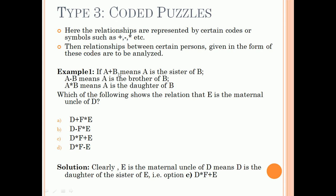If A+B means A is the sister of B, A-B means A is the brother of B, A×B means A is the daughter of B, which of the following shows the relation that E is the maternal uncle of D? Now we have to check each option. Clearly, E is the maternal uncle of D means D is the daughter of the sister of E, that is option C: D×F+E.